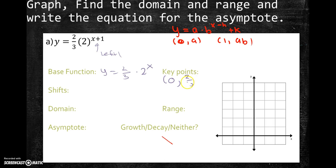We're going to use our generic key points that we're always going to have. In this particular example, it's 0 comma a, which is 2 thirds. And 1 comma 2 thirds times 2 is 4 thirds, or 1 and 1 third.